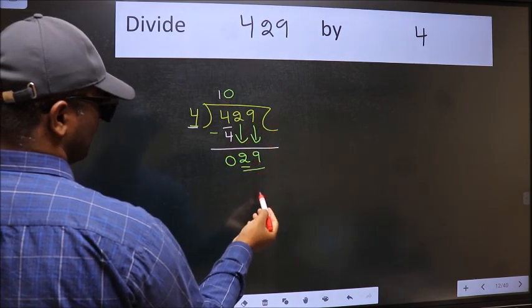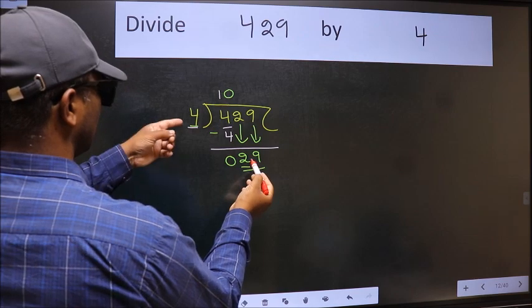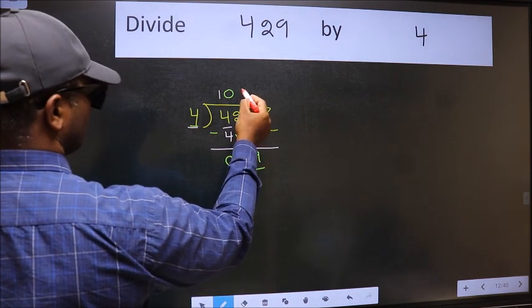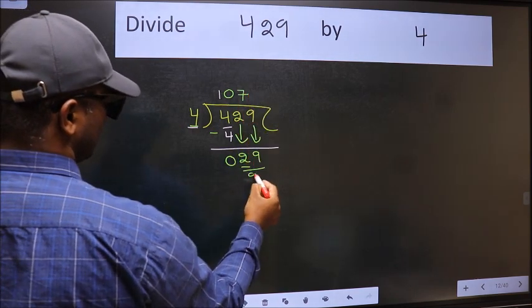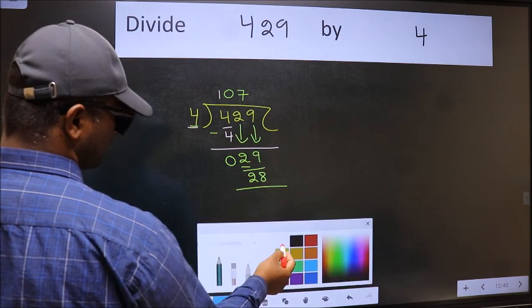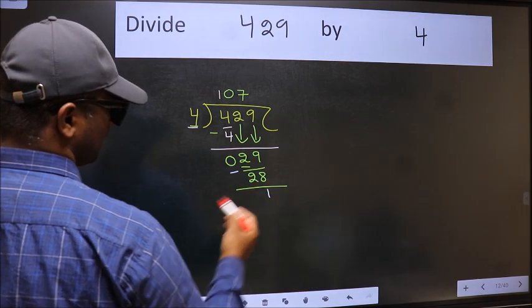Now we have 29. A number close to 29 in the 4 table is 4 sevens are 28. Now we should subtract. We get 1.